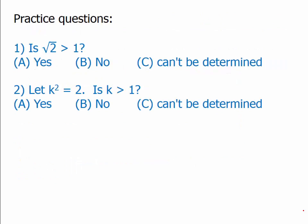Here are two simplistic practice questions. Pause the video and think about whether these two questions have the same answer or not. Question number one asks: is root two greater than one? Notice that root two is printed on the page — it is actually part of the problem. That square root symbol means take the positive root only. So we're talking about only the positive square root of two. Is that bigger than one? Of course it's bigger than one — it's between one and two. So yes, it's bigger than one.